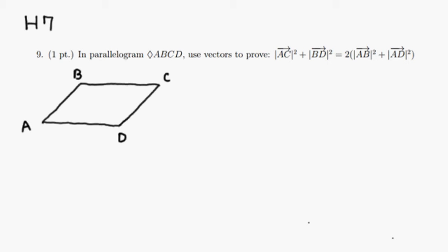So we're talking about AC. Vector AC is a vector going like this. But we can do that by simply going on AB and adding BC to it. So maybe I should write that.